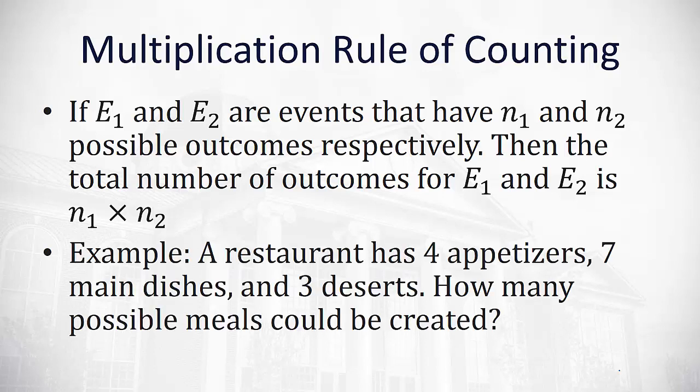Okay, that sounds really complicated. It's actually really simple if we look at an example. We have a restaurant that has four appetizers, seven main dishes, and three desserts. How many possible meals could be created from this? The multiplication rule of counting says we multiply the possibilities. So there's four appetizers times seven main dishes times three desserts, and that's going to give us 84 possible meals that we can organize from these options.